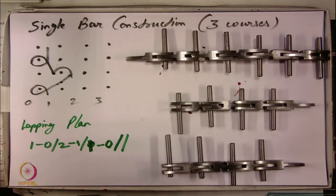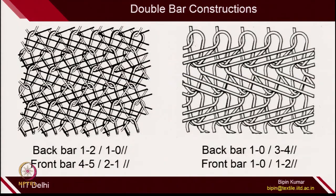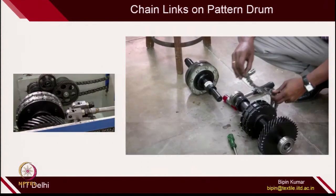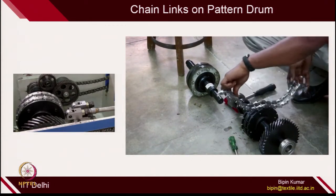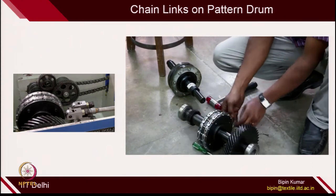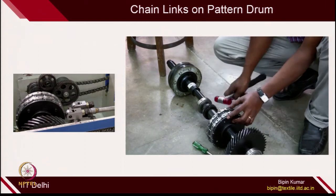Now let's move to double bar construction. In double bar construction there are 2 sets of guide bars, so you need to follow chain link sequences for each individual guide bar. Once you have the sequence for each guide bar, you can fix them on the pattern drum and proceed with fabric production.